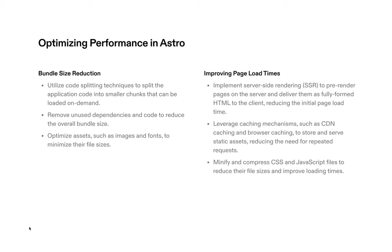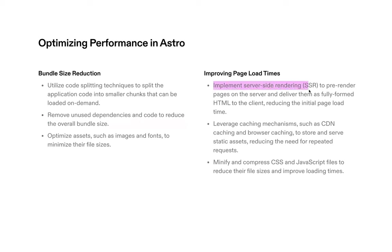On optimization: Astro removes unused dependencies and code to reduce the overall bundle size, which is quite interesting. It also uses code-splitting techniques to improve page load times. Additionally, Astro implements server-side rendering to pre-render pages on the server and deliver fully-formed HTML to the client, reducing the initial page load time.